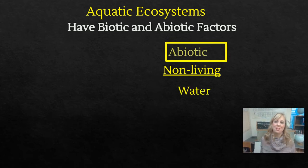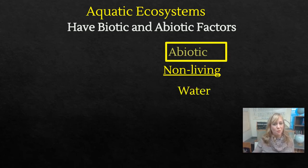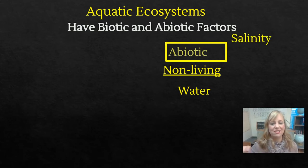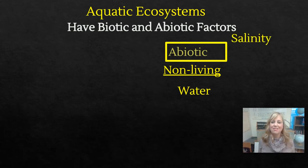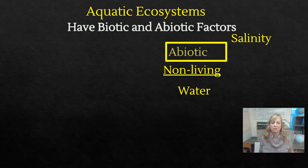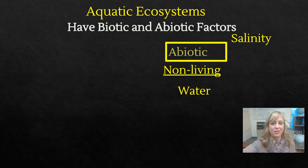One of the biggest abiotic factors we have in aquatic ecosystems is water. Water has a lot of things going on inside of it, such as salinity — does it have a lot of salt like the ocean, or a little salt like the ponds and lakes around here?